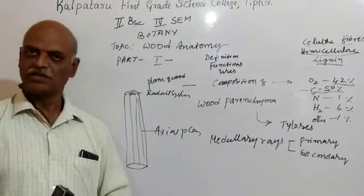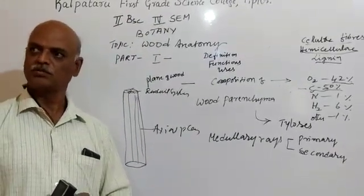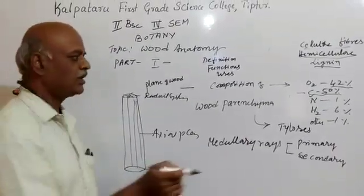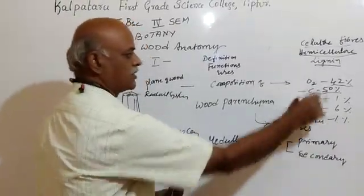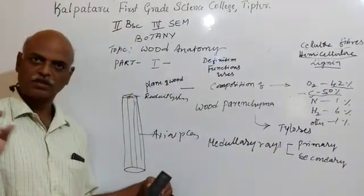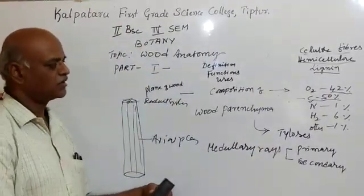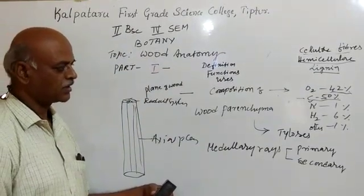Others means calcium, magnesium, sodium, potassium, chloride. There are many elements in the wood, all others account for 1%. Totally, wood consists of carbon, oxygen, nitrogen, hydrogen, and other chemicals.